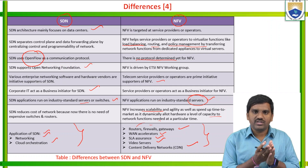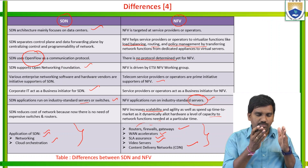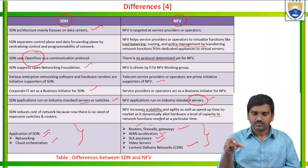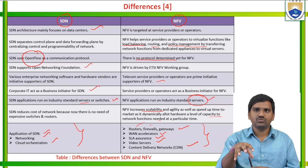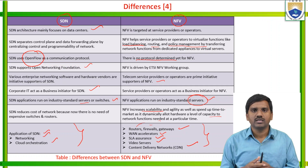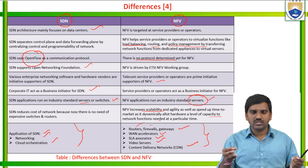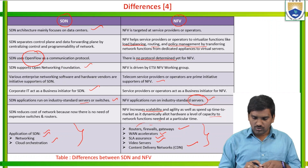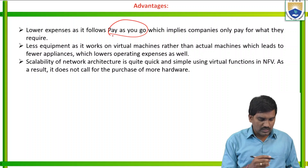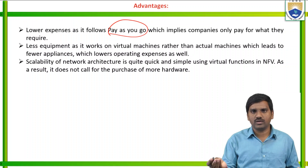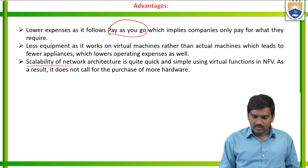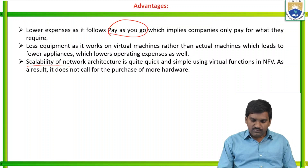In summary, software defined networking maintains a centralized control plane for all individual data planes, while network function virtualization operates to virtualize functions like load balancing, routing, and policy management by transferring network functions from dedicated applications to virtual servers. The advantages of NFV include lower expenses with pay-as-you-go, less equipment needed, and quick scalability of network architecture. With this, the session is complete.